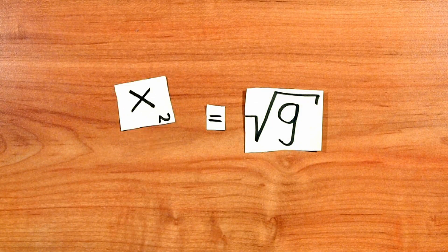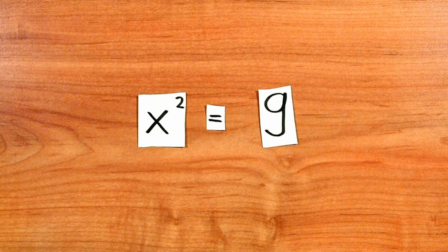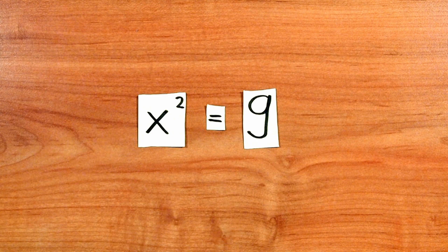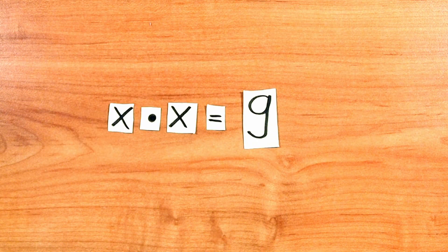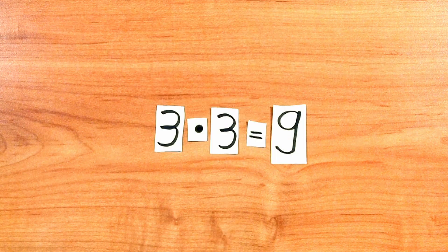If you want to know what the square root of 9 is, you have to ask yourself what number you'll have to square to get 9. In other words, which number multiplied by itself would result in 9? The answer is simple, 3, because 3 times 3 is 9.